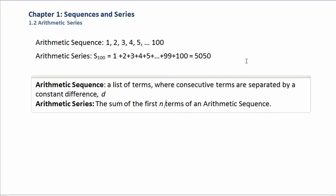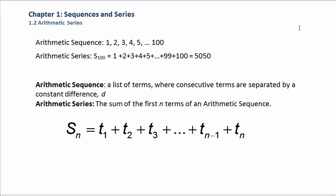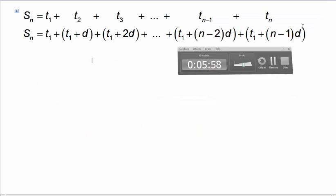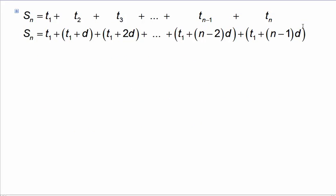When we're working with an arithmetic series, we would say the sum of the first n terms of an arithmetic sequence is t1 plus t2 plus t3 and so on, all the way up to term n-1, and finally adding on term n at the end. But of course, we can use the general term and our knowledge of arithmetic sequences to simplify this statement a little bit more. So we can replace term 2 with its equivalent value, t1 plus d, term 3 with its value of t1 plus 2d, and term n-1 with t1 plus n-2 times d, and finally term n replaced with t1 plus n-1 times d.